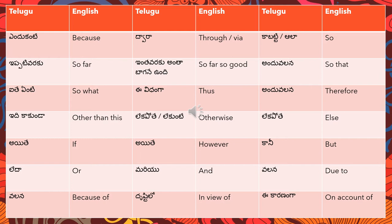'Iti kaakunda' means 'other than this'. 'Lekapote' or 'leekunte' means 'otherwise'. Lekapote can also be translated as 'else'.